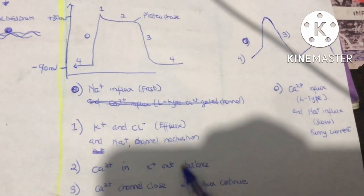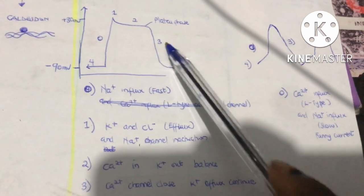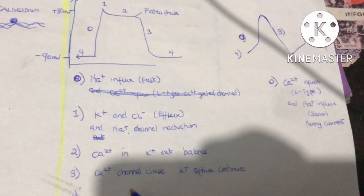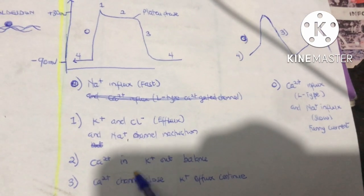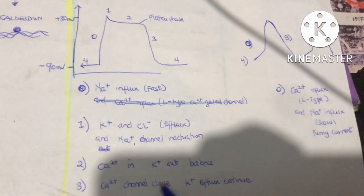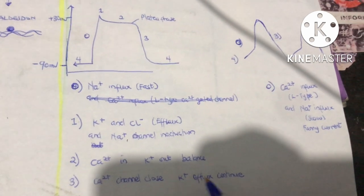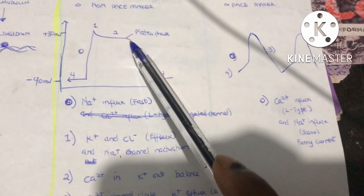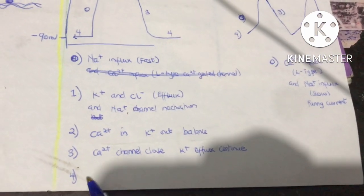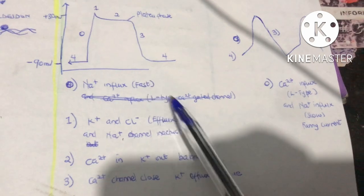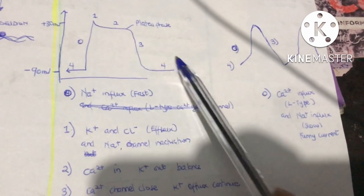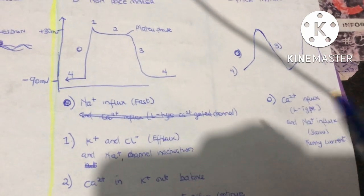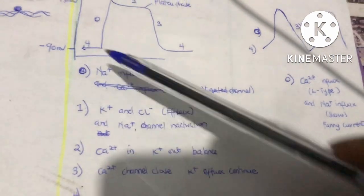Phase 3 repolarization: calcium voltage-gated channels close while potassium channels remain open, causing potassium efflux that brings the membrane back toward negative. Phase 4 is the resting membrane potential, reached when potassium voltage-gated channels close. The resting potential is maintained by the sodium-potassium ATPase pump.